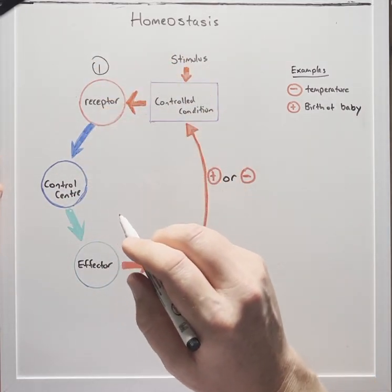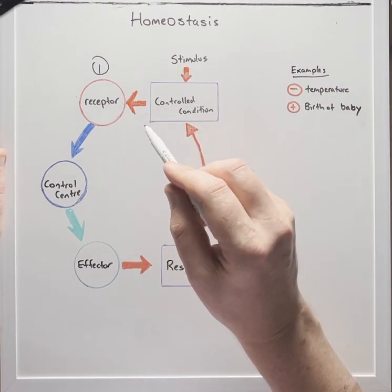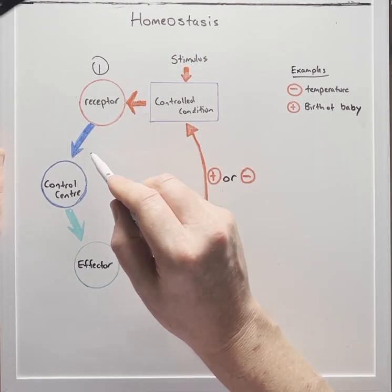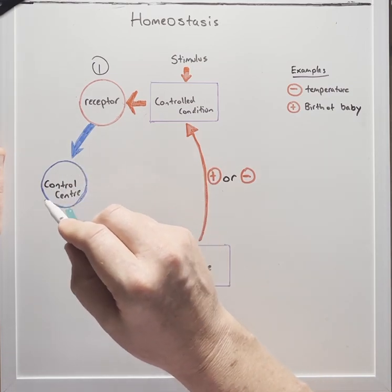The receptor, number one, monitors the change in the control condition and sends an afferent signal which could be a hormone or a nerve signal to the control centre.